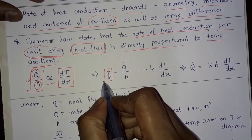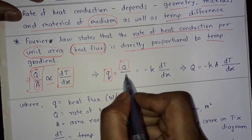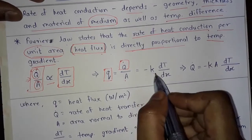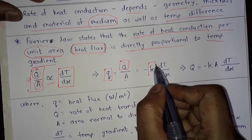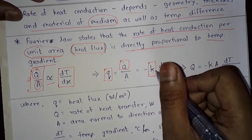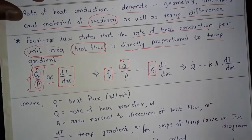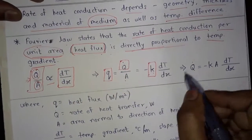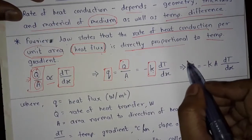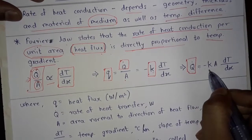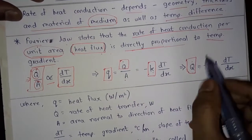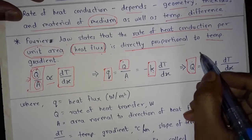This is further simplified: small q, the heat flux, equals q-dot upon A equals minus k times dT upon dx, where k is the constant of proportionality called thermal conductivity. It is further simplified as q-dot equals minus k A times dT upon dx, and this is the equation for the rate of heat transfer.